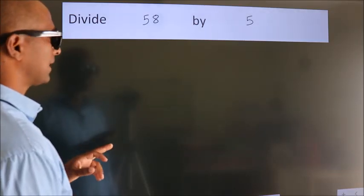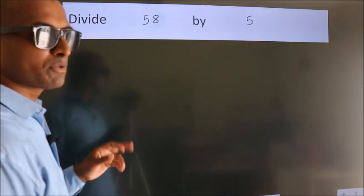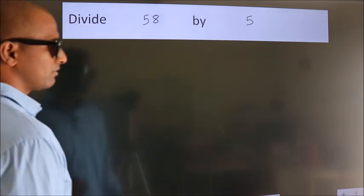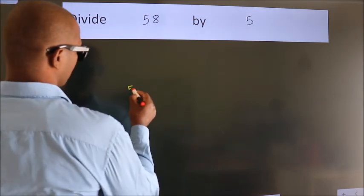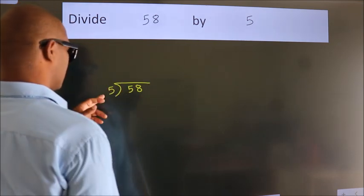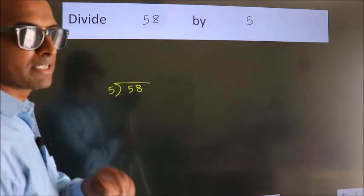Divide 58 by 5. To do this division, we should frame it in this way: 58 here, 5 here. This is your step 1.